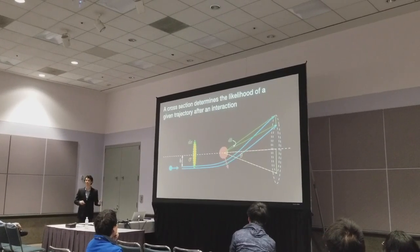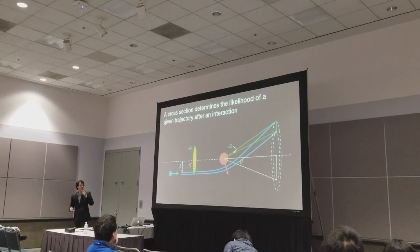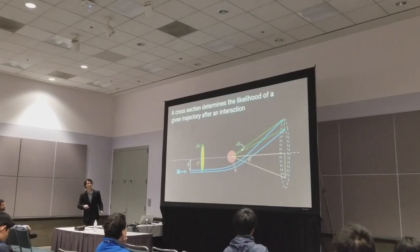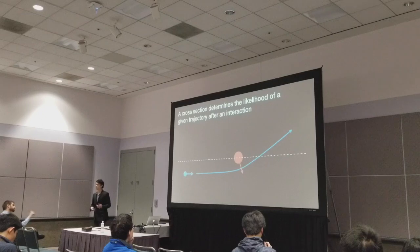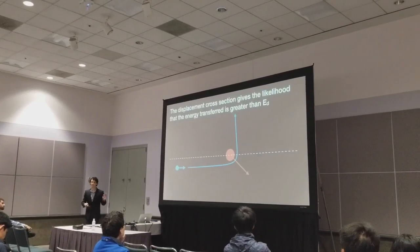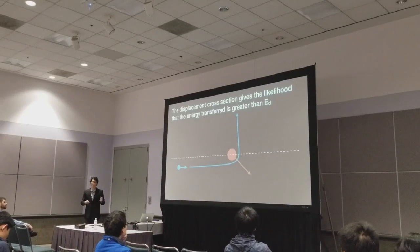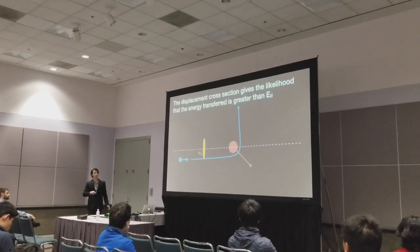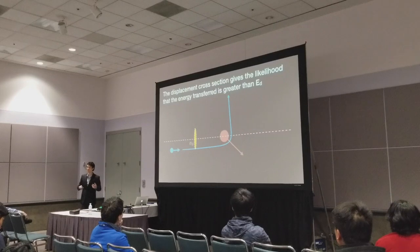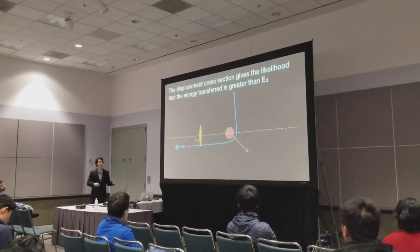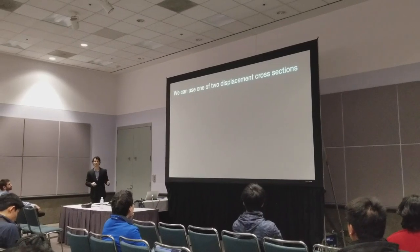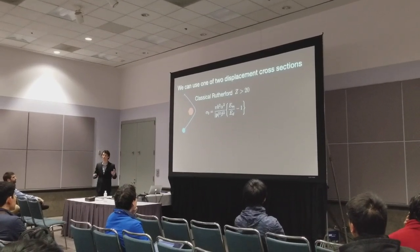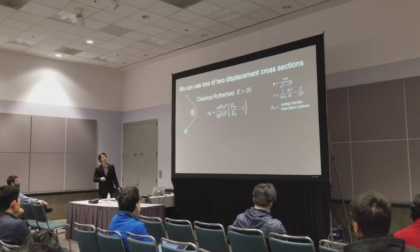We can use scattering theory to figure out the likelihood of this type of displacement. An electron that enters with impact parameter b-sigma gets scattered to angle theta. The sharper the scattering angle, the more energy is imparted to the target atom. There exists some angle at which the energy transfer is great enough to produce some kind of displacement. We define the displacement cross-section as that corresponding to all angles greater than that threshold angle.